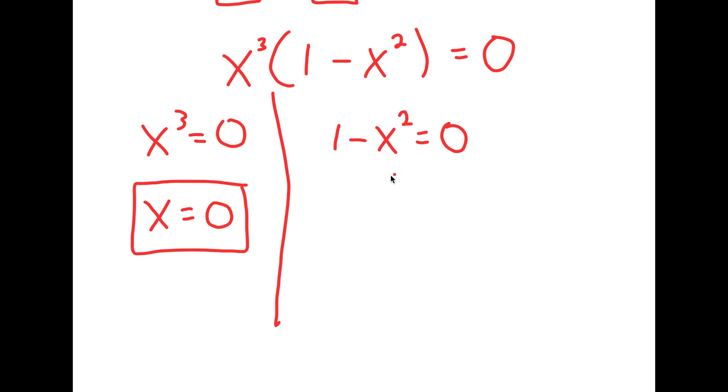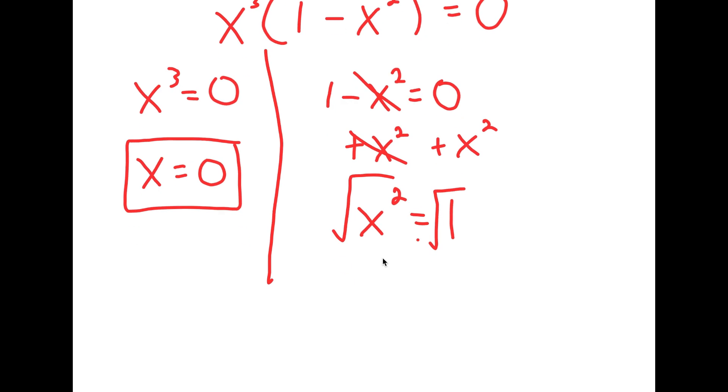And for 1 minus x squared is equal to 0, I can add x squared on both sides. So these two cancel out and get x squared is equal to 1. Now if I take the square root, I get x is equal to positive or negative 1.